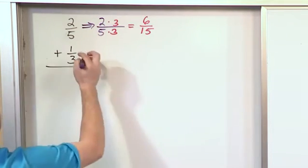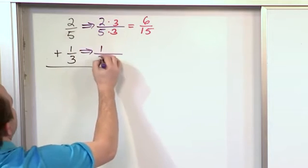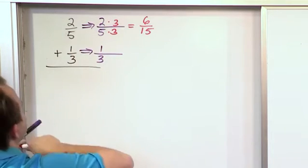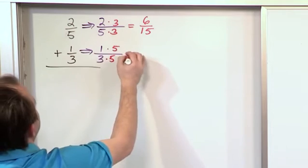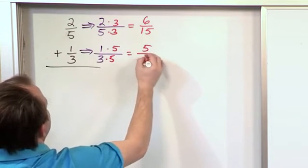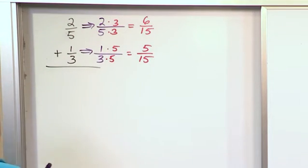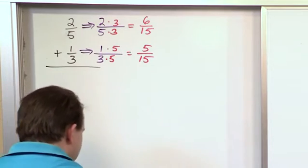Then the bottom fraction is going to be one-third and we need to multiply this one by five over five. One times five is five, three times five is fifteen. So now we have two fractions with a common denominator of fifteen.